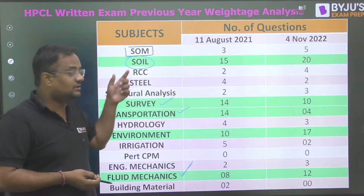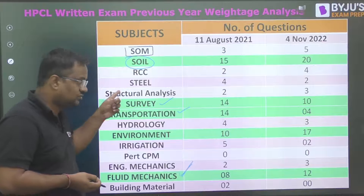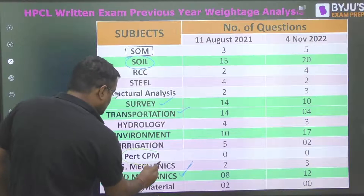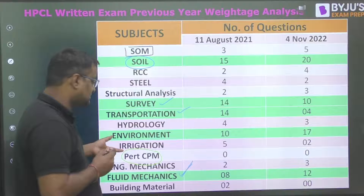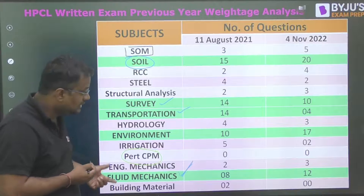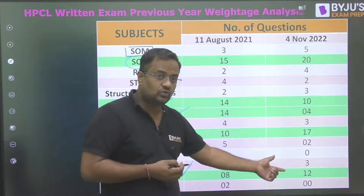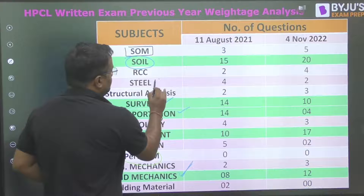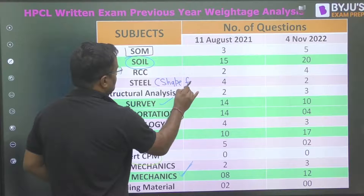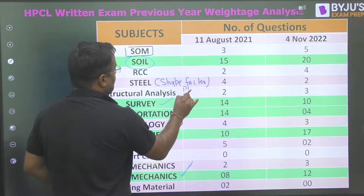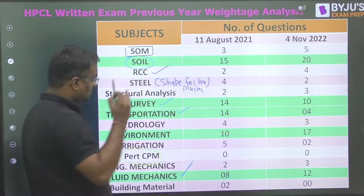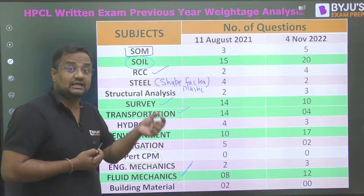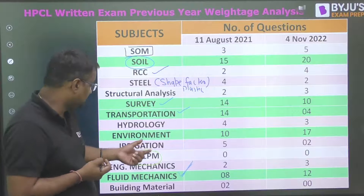Even though direct SOM questions are less in HPCL, it remains a very important subject because its concepts underpin RCC, steel, and other topics. No questions have been asked from PERT and CPM. From irrigation, questions are from spillway, delta, and duty. In building materials, there were no questions in 2022 but some on fly ash in 2021. Shape factor and plastic analysis questions have been asked from steel structures.